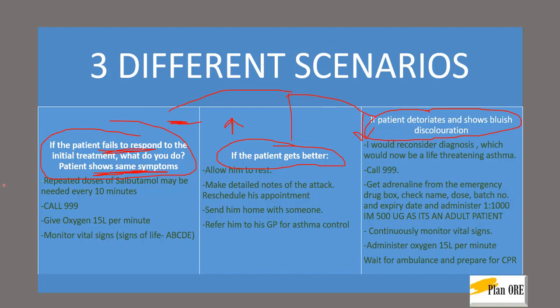If the patient is the same — no improvement — you will repeat the dose of salbutamol every 10 minutes, and the dose remains the same at up to 10 puffs. This time you will call 999 because you are giving it for the second or third time and the patient is still not improving. Then continue oxygen at 15 liters per minute and monitor vital signs.